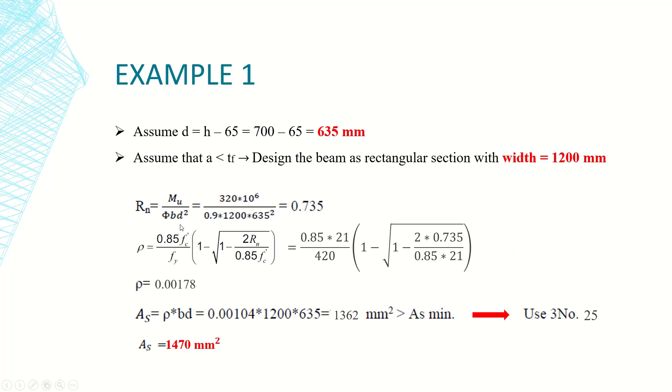This is the moment term, this is phi b d squared. Then as we did last time, rho is equal to a formula that relates f'c, fy, and Rn to rho. So I have Rn here, f'c is 21, fy is 420, so rho will equal 0.00178.